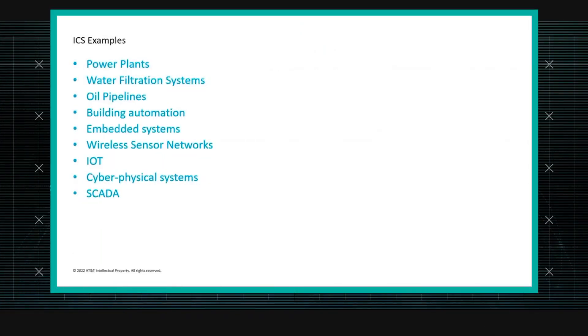Examples of industrial control systems include power plants, water filtration systems, oil pipelines, and even smaller-scale systems such as building automation and embedded systems. IoT devices are also included, which is arguably debatable, but they are pretty related to ICS since a lot of sensors used in industrial control systems — like fuel gauges and temperature gauges — are IoT devices.